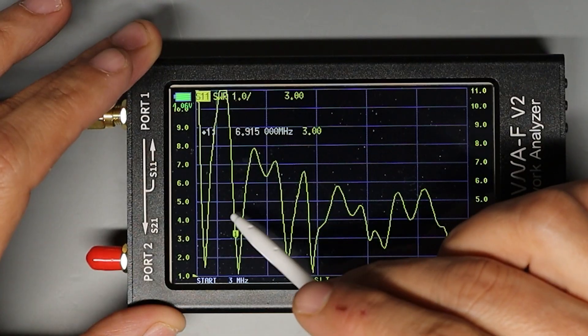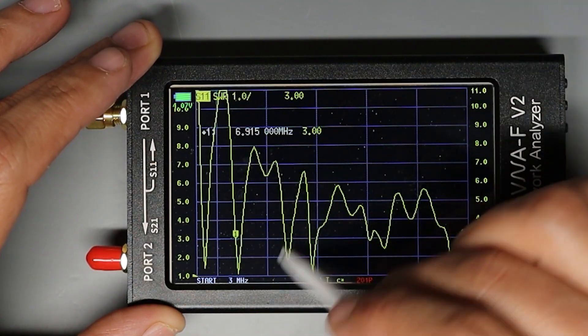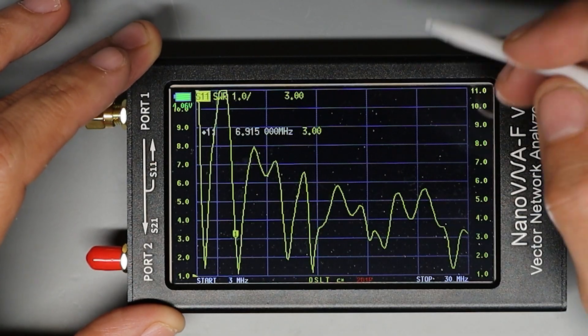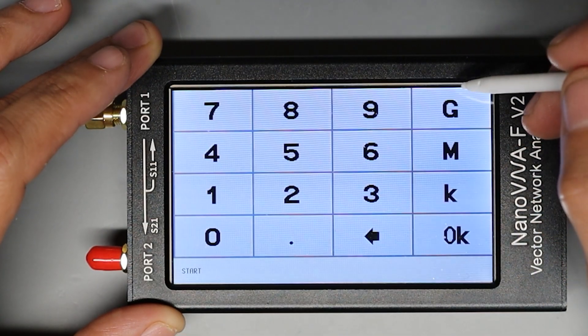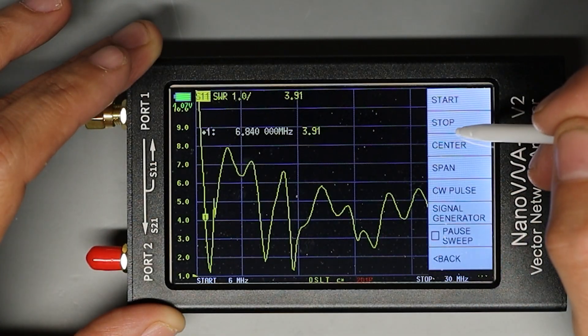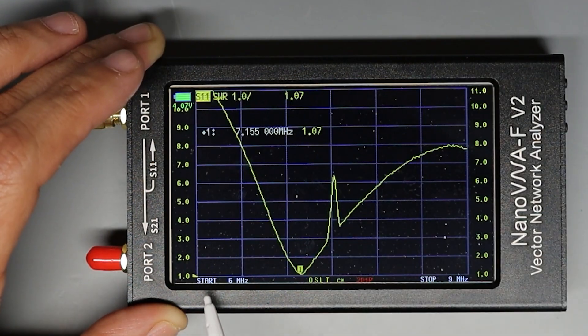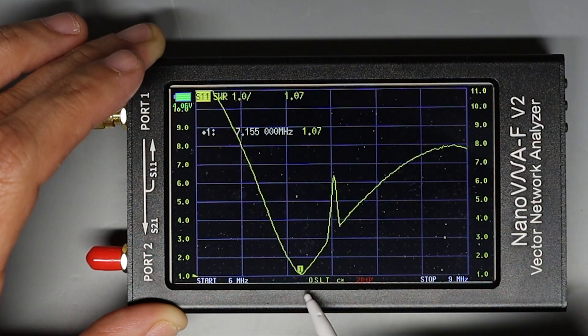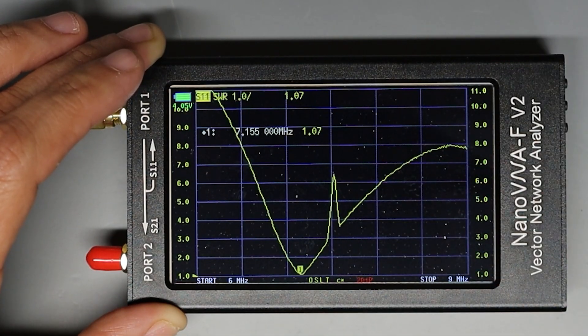So now let's zoom in and actually take a closer look at the frequency span between 6 megahertz and 9 megahertz so we can get a better idea of what this antenna is doing in the 40 meter band. So in order to do that I'm going to change my start and stop frequencies. I'll click start and then I'll punch in 6 megahertz and then I'll change the stop frequency and make that 9 megahertz. So now that we've zoomed in you can see we're sweeping between 6 and 9 megahertz and it looks like our SWR low point is right about at 7.155 megahertz so right in the 40 meter band.